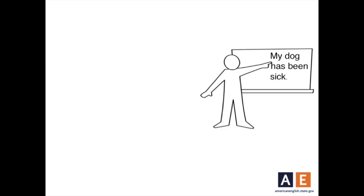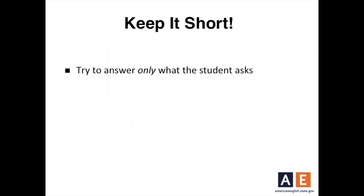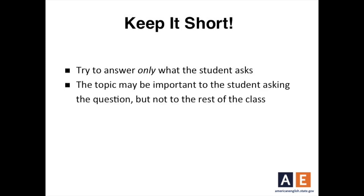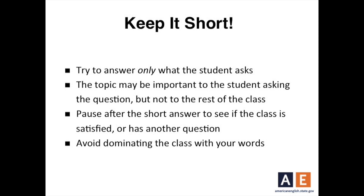Here's what I try to do. A student asks, 'Is that the present perfect?' My response? 'Yes, it is.' Why not explain more? Here's my rationale: I try to answer only what the student asks. I try not to assume that the student wants more. The topic may be important to that student, but not to the rest of the class. Answer short first, then make an assessment — does the class seem to want more information? The more we explain, the harder it is to reduce teacher talk time.